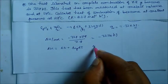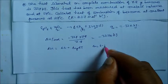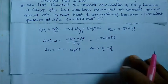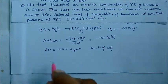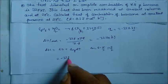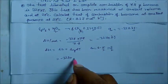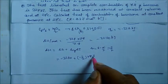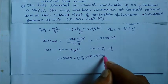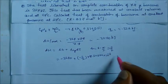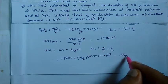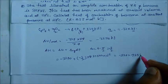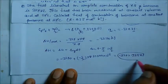Using delta H equals delta U plus delta N times R times T: delta N equals moles of gaseous products minus moles of gaseous reactants, which is 6 minus 15/2 equals minus 3/2. So delta H equals minus 3270 plus (minus 3/2) multiplied by 8.3 multiplied by 300 into 10⁻³, giving minus 3273.735 kilojoule. This is our answer.